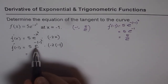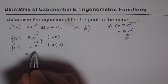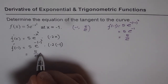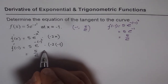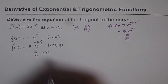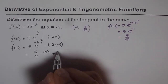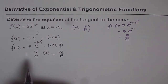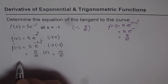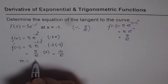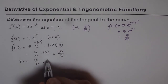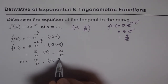This is e to the power of -1, so we can write this as 5 over e, and minus times minus is plus, so we get plus 2 — times 2 — giving us 10 over e. So the slope of the tangent at the given point is 10/e, and the coordinates of the point are (-1, 5/e).